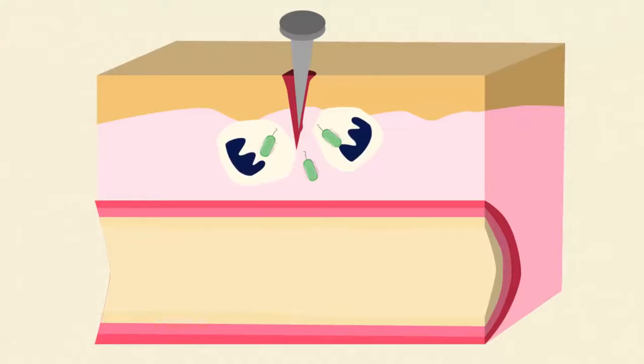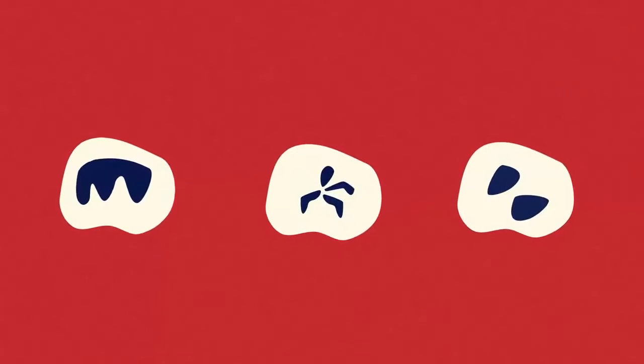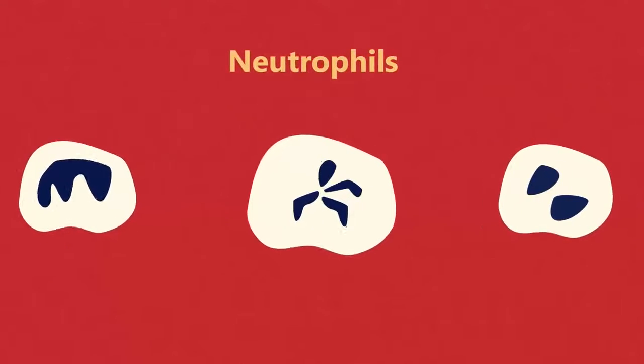They will often die loaded with bacteria that they have engulfed and killed. In boils and cuts this is seen as yellow pus. There are different types of phagocytes with neutrophils being the most common.